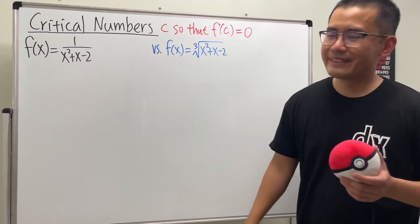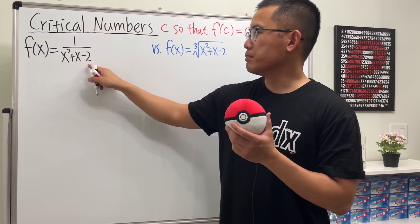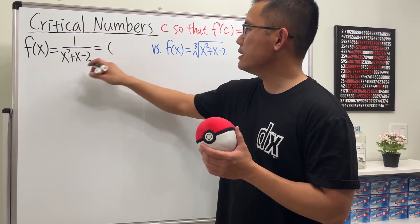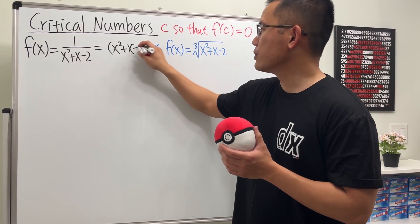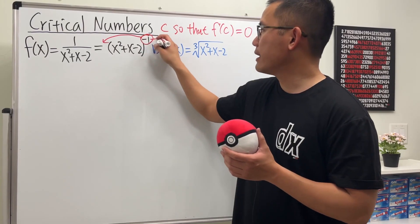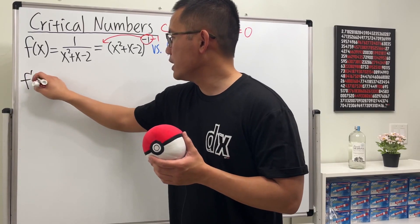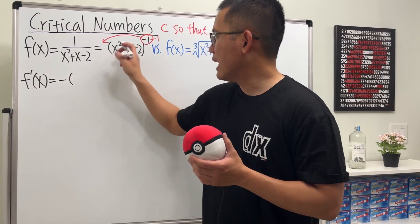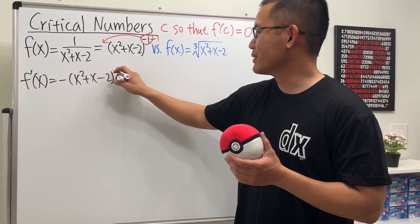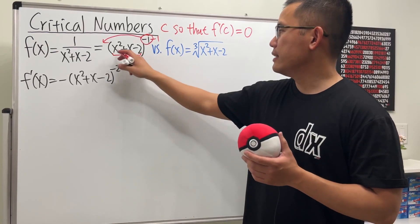Let's differentiate the first function: 1 over (x² + x - 2). We don't need the quotient rule — we can rewrite this as (x² + x - 2) raised to the negative 1 power, then apply the power rule. The derivative is negative (x² + x - 2) to the negative 2, and then we apply the chain rule.